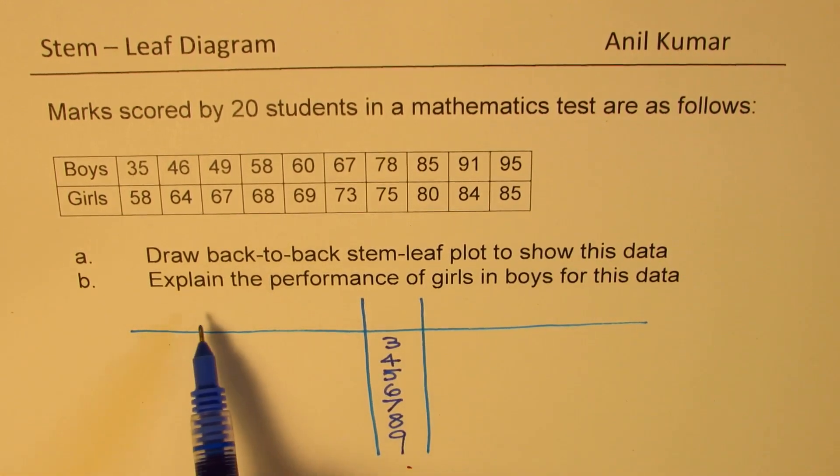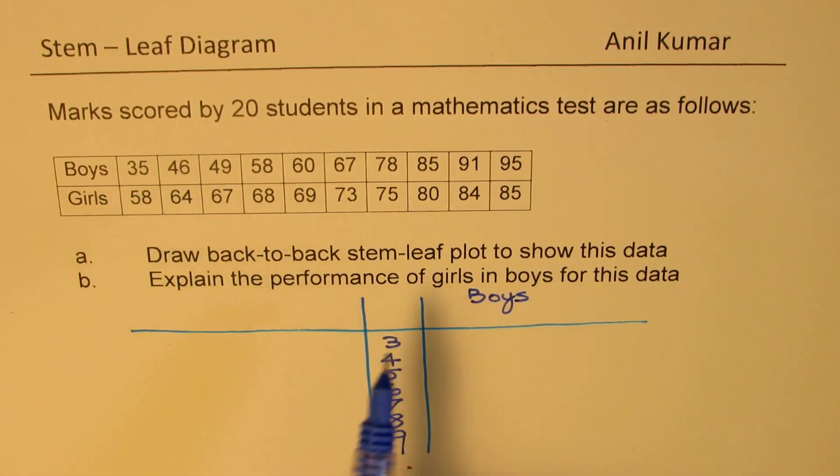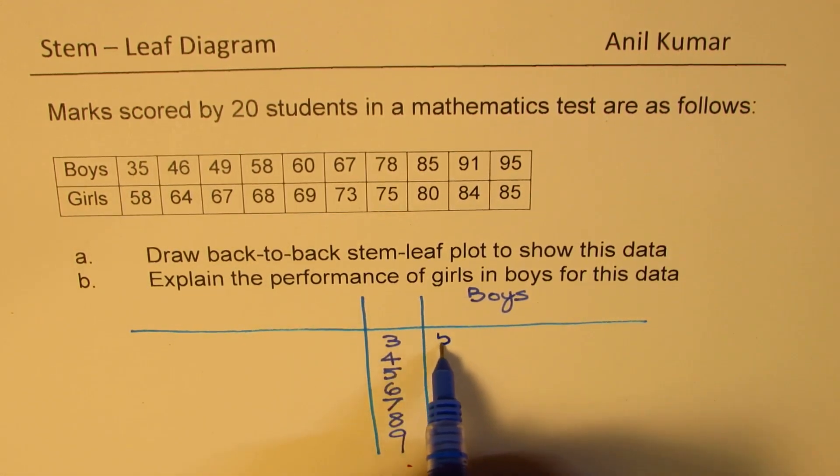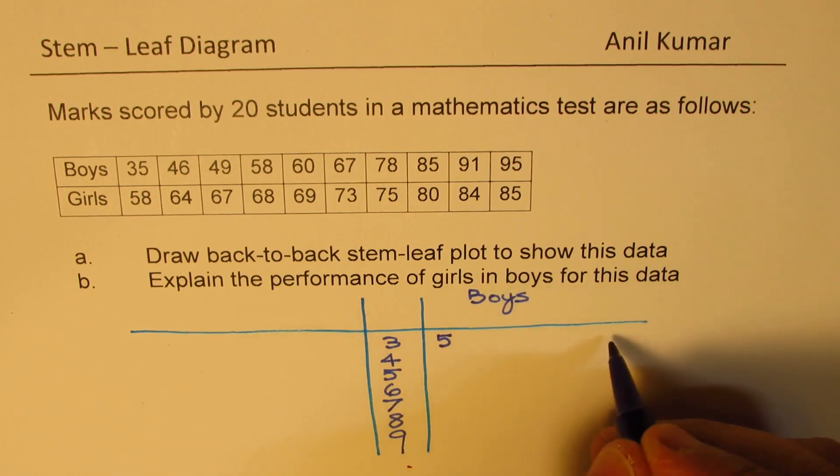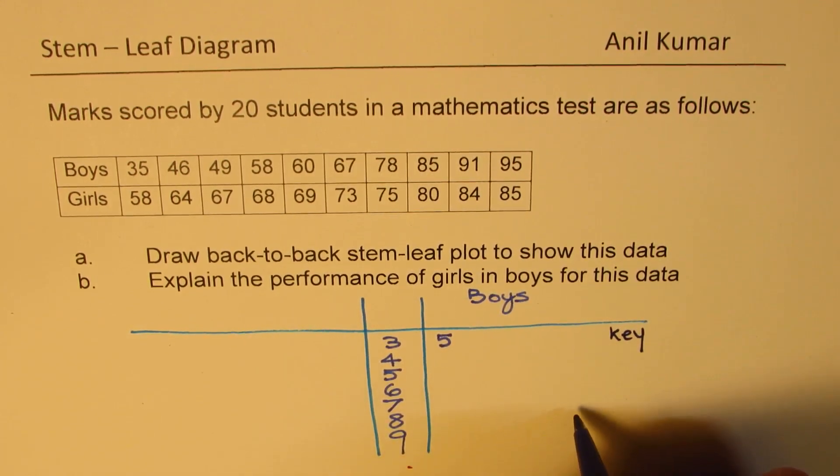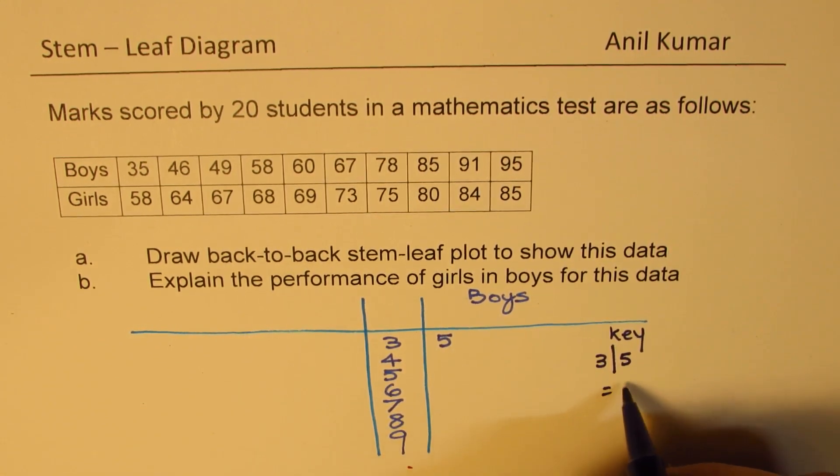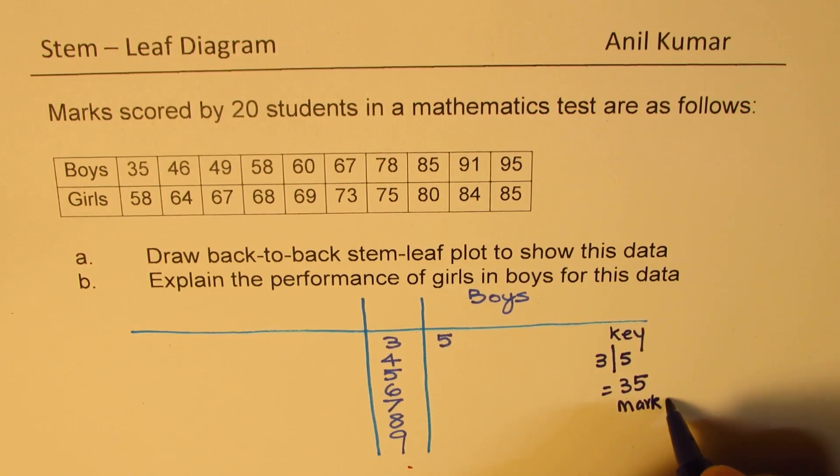Now let's take boys on one side and girls on the other side. So if I take boys on this side, let's now substitute the values and group the data into these groups of 30s. So 35 means 3 and 5. So what we see here is that the key is, as far as the boys group is concerned, the key over here is that 3, 5 means 35. So in this case, it is 35 marks. Marks scored, we'll write 35 marks. So that becomes the key. It is important to identify the key. Without that, this is not really meaningful.